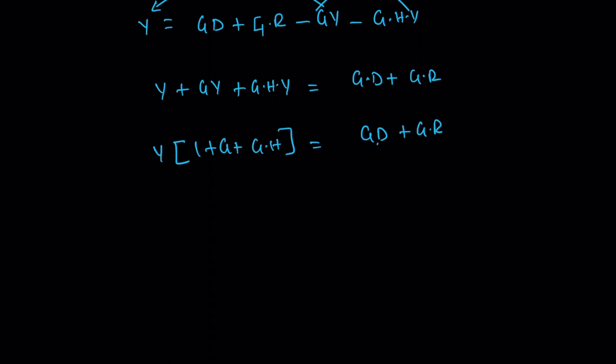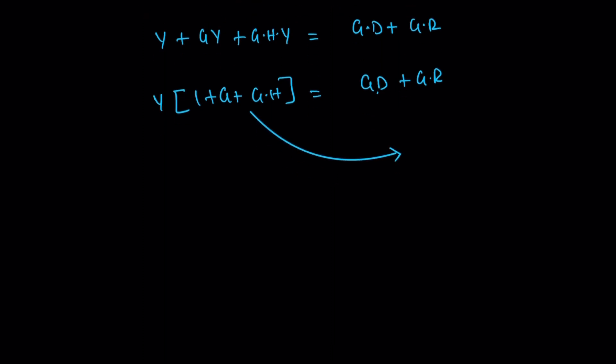Then we need Y and this one is moving to another side, there is a division. Y equals G D plus G R divided by 1 plus G plus G H.